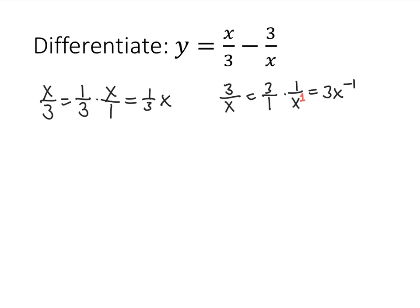Remember that a negative exponent means we've got x's in the denominator, so x to the minus 1 just means 1 over x to the 1. So we've rewritten our function now as y equals one-third x minus 3x to the minus 1.